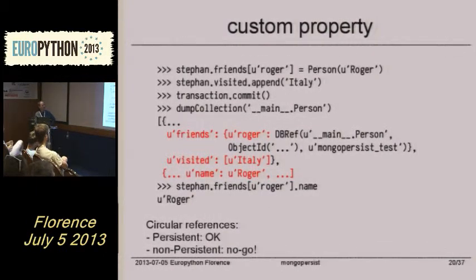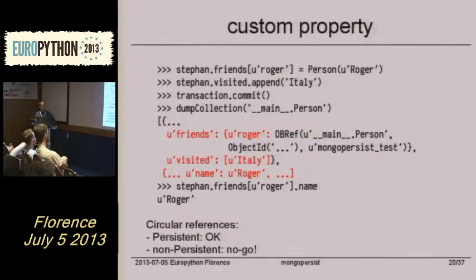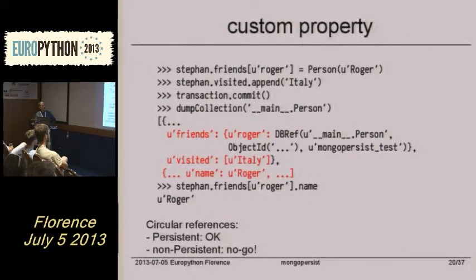As you see, in Stefan's friends Roger name, it's a lot more easier to access any attribute than using find and whatever with the db refs.